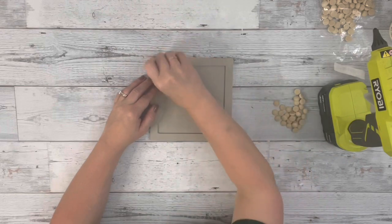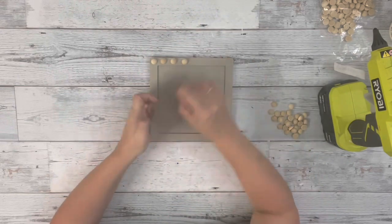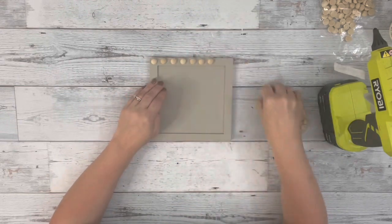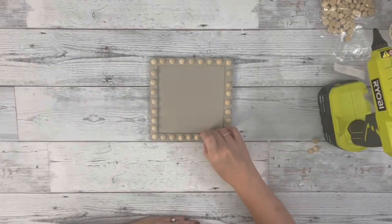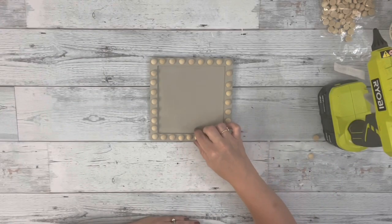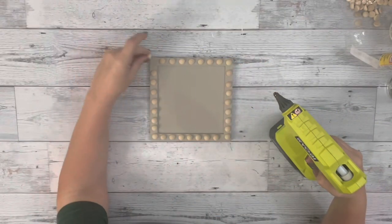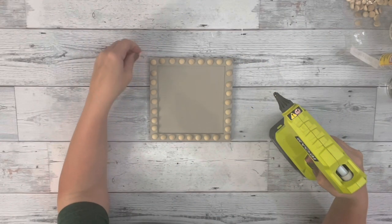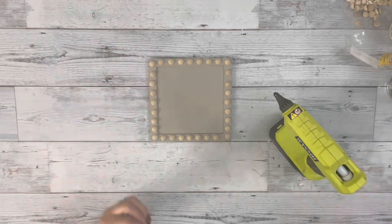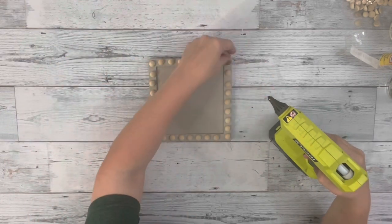Once it was completely dry, I took these half round beads which I got from Temu, but Amazon has them as well. I placed four on each corner and then seven in between each of the corner pieces. Once I had them set where I wanted them to go, I just glued them down with some hot glue one at a time.